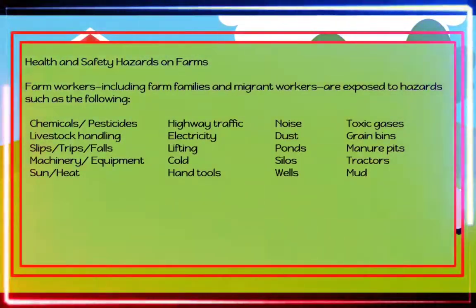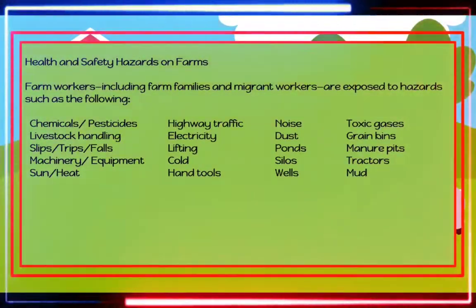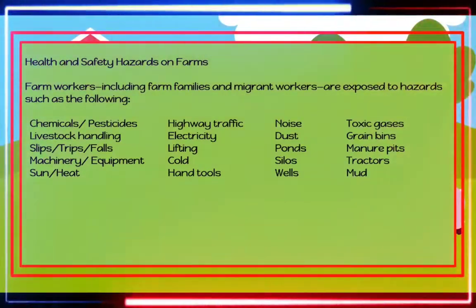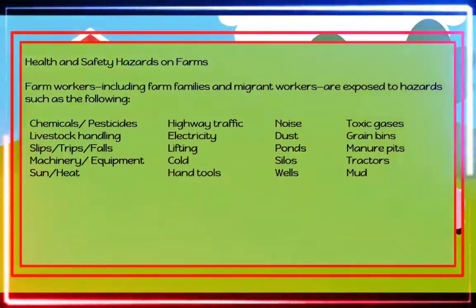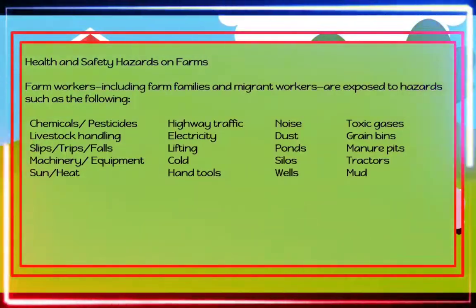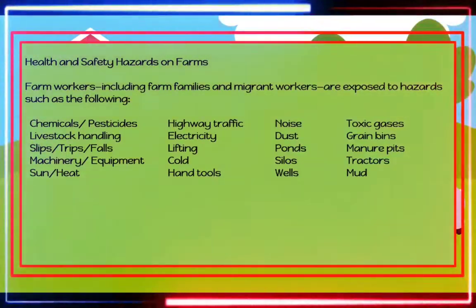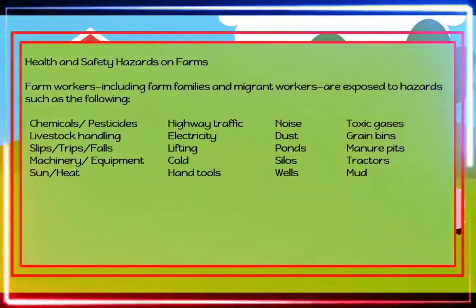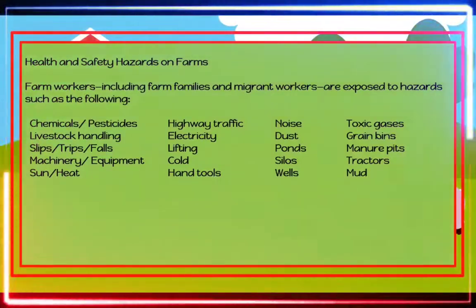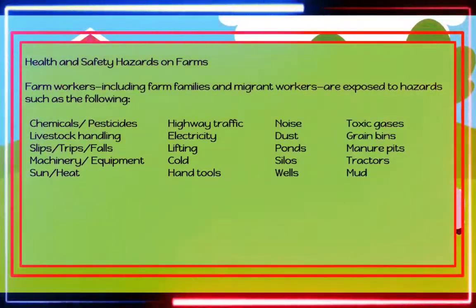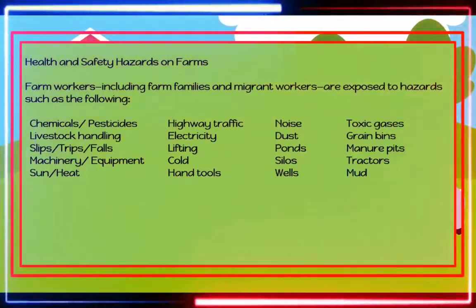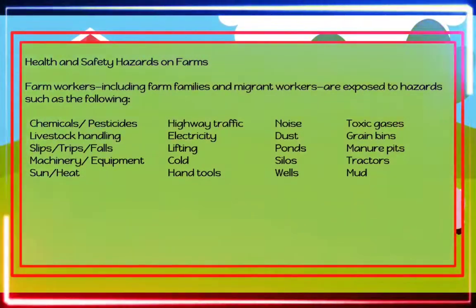Health and safety hazards on farms: Farm workers, including farm families and migrant workers, are exposed to hazards such as chemicals, pesticides, livestock handling, slips, trips, falls, machinery and equipment, sun, heat, highway traffic, electricity, lifting, cold, hand tools, noise, dust, ponds, wells, toxic gases, grain bins, manure pits, tractors, and mud.